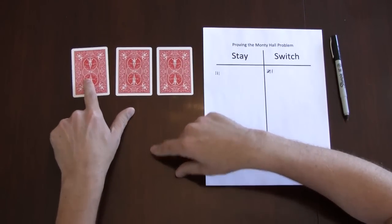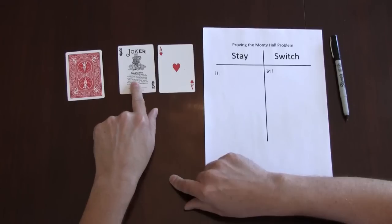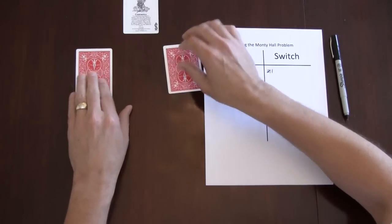In this first run through we're going to pick the first door every time. Monty knows there's at least one goat behind the other two doors and he shows this to us. We're left with the two doors.